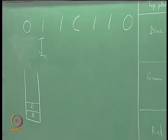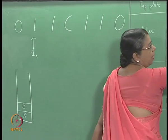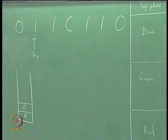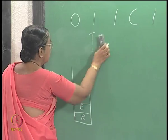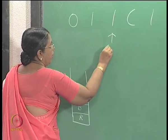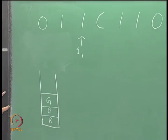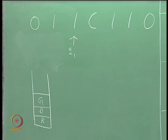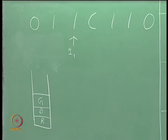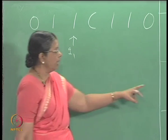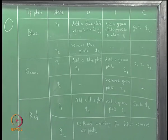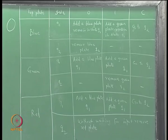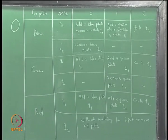Now in q1 you see a 1 and the top plate is blue — the action is: add a green plate, remain in state q1. You add a green plate and move the input pointer. Again you have green plate on top, state q1, reading a 1 — add a green plate, remain in q1, move the input pointer. Now in q1 when you read a c, the action is go to q2 — you are not manipulating the stack, just change the state to q2.